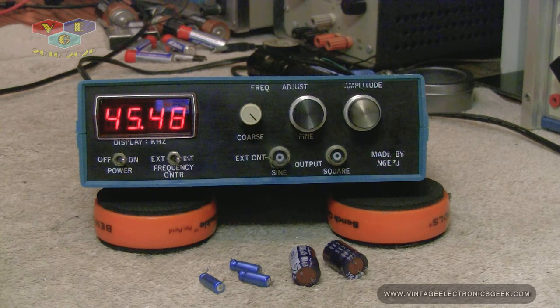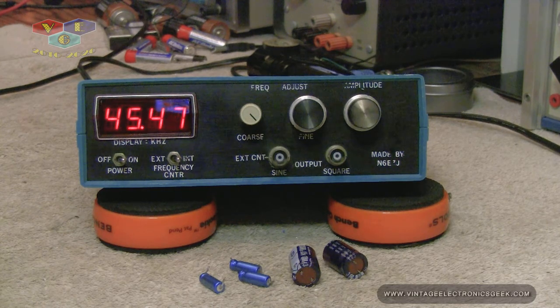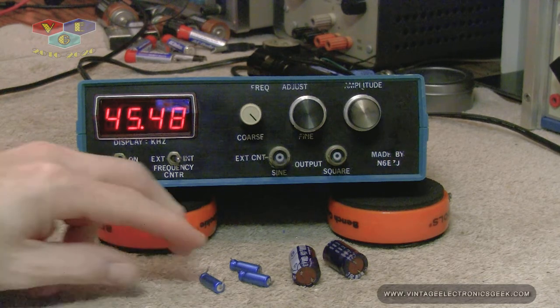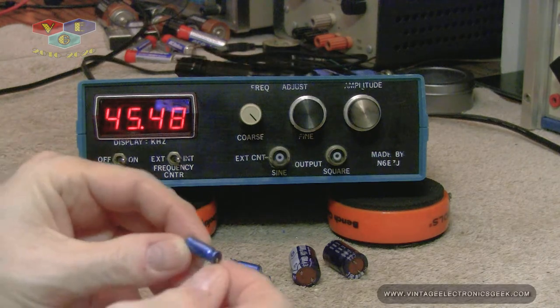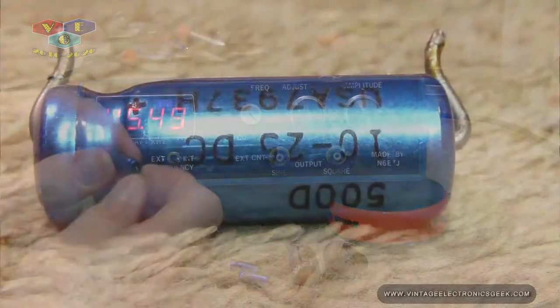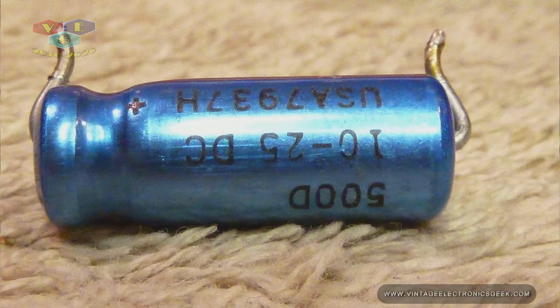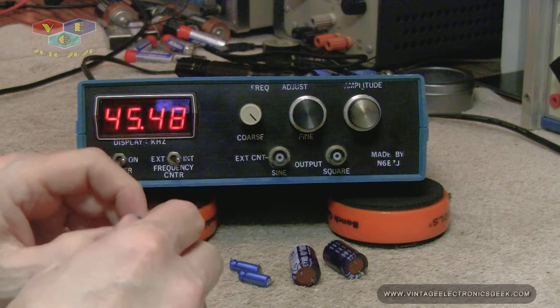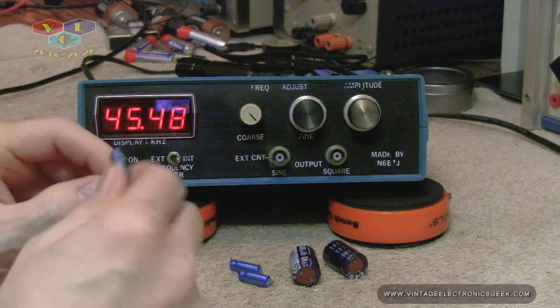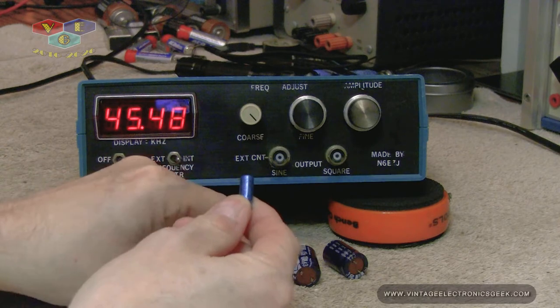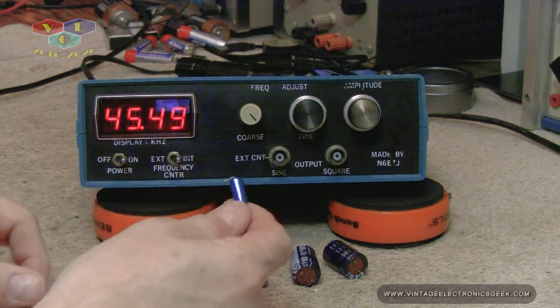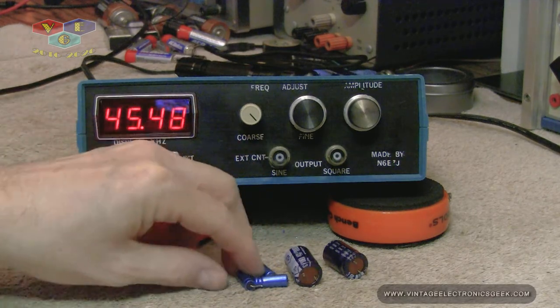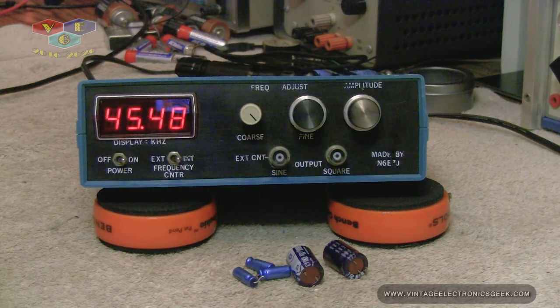And those ones actually tested good. I pulled them out of the board, tested them. I figured, well, I've got them out, I'm just going to go ahead and replace them with new ones. These little blue ones are Spragues, and they're 10 microfarads at 25 volts. These ones, all three of these did check high ESRs, so I went ahead and replaced them with modern day. And everything is fat and happy.